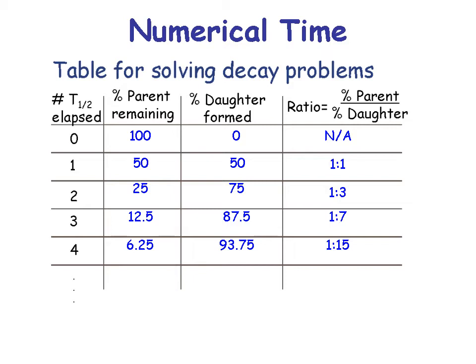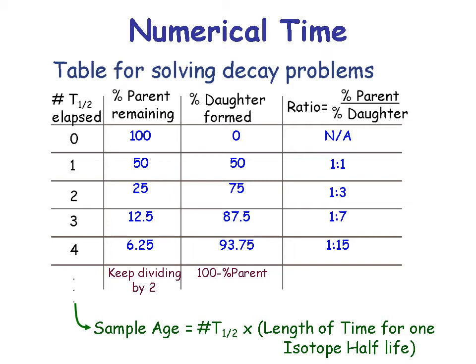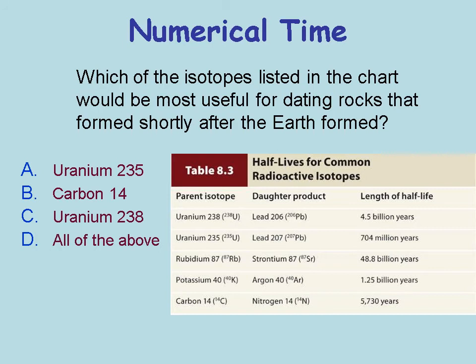The ratio of parent to daughter changes predictably. The formula is: sample age equals the number of half-lives times the length of one half-life. Which isotope would be most useful for dating rocks that formed shortly after the Earth formed? Uranium-235 — uranium-238 has too long a half-life, and carbon-14 is way too short. You can't use carbon-14 after about 50,000 years. For a sample with 15 protons and 17 neutrons, the atomic number is 15 and the atomic mass is 32.